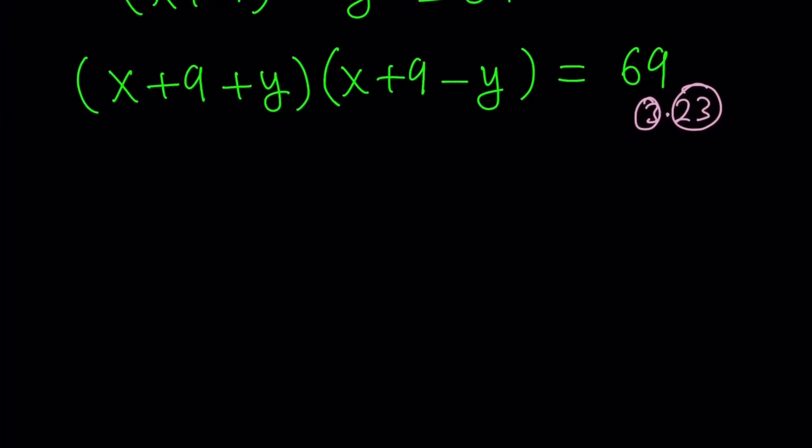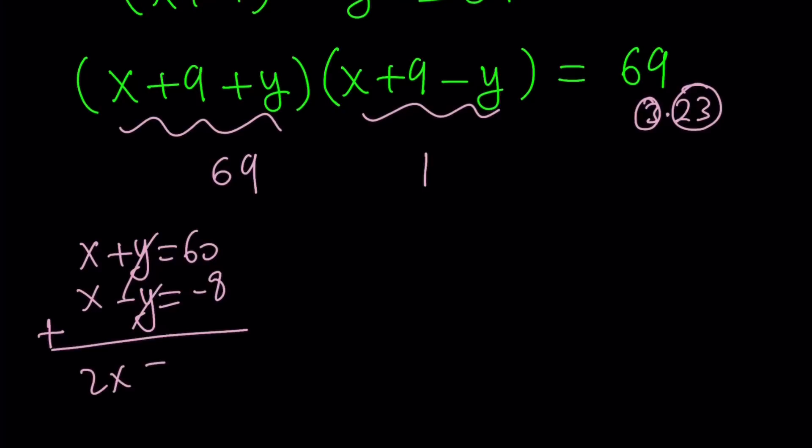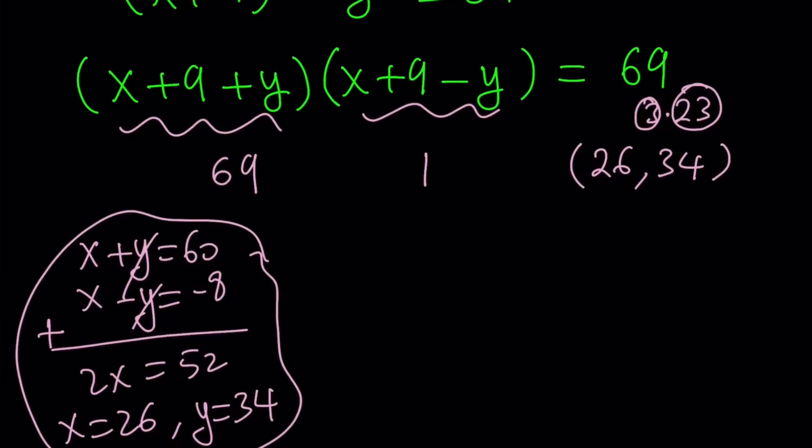We can basically set this equal to 69 and set this equal to 1. If you set this equal to 69, that basically means x + 9 + y = 69 and x + 9 - y = 1. So you get a system of equations. You can easily solve it just by adding these two equations side by side. From here, we get 2x = 52 and x = 26. If you plug in 26, that gives you y = 34. So we basically get an ordered pair (26, 34).